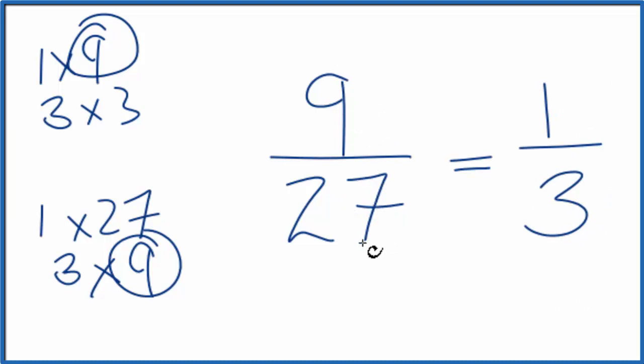If you divide 9 by 27 or 1 by 3, you'll get the same number. This is Dr. B, and thanks for watching.